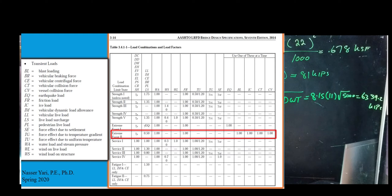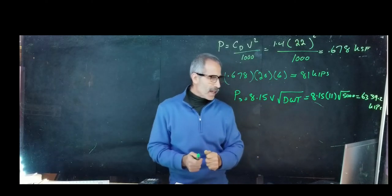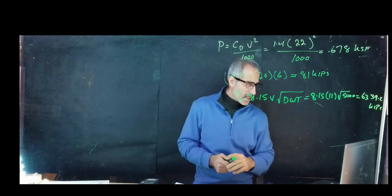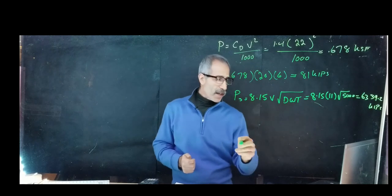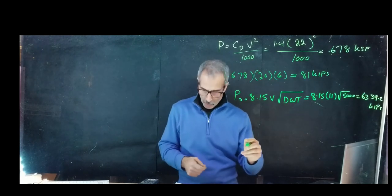In extreme event 2, we're going to have 1 times WA and 1 times CV. These are basically on transit loads.